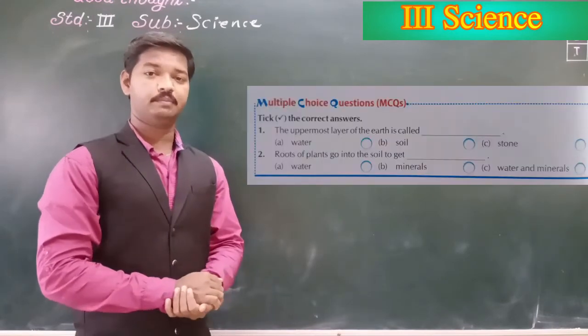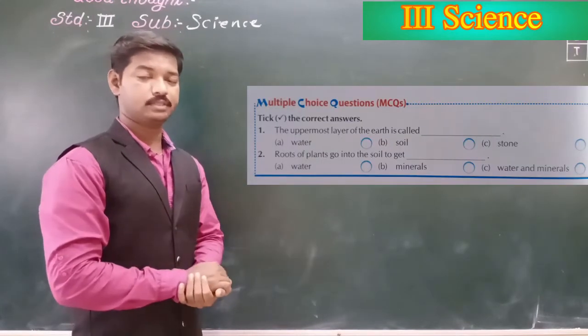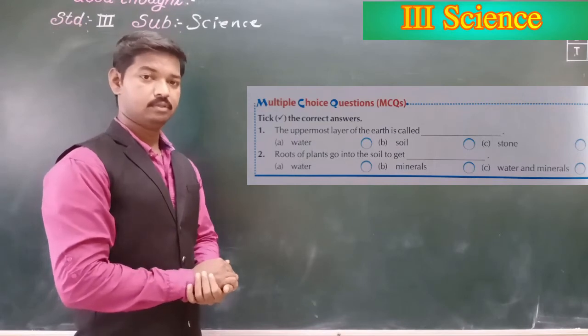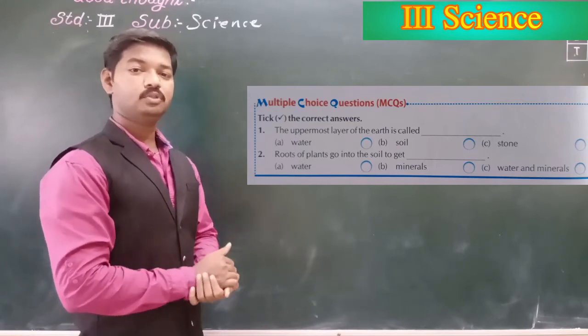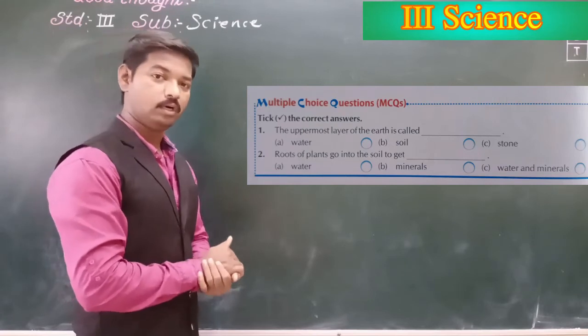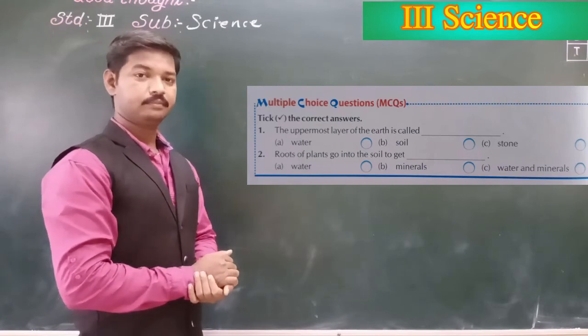Now see on page number twenty-four. Multiple choice questions are given there. So number one is: The uppermost layer of the earth is called. Correct.